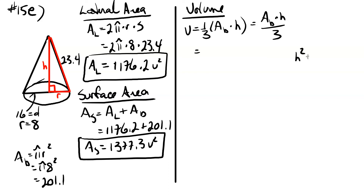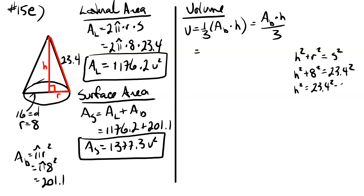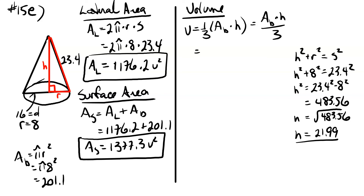Taking the square root of four hundred and eighty three point five six gives us a height of twenty one point nine nine. We already found the area of the base as two hundred and one point one. Multiplying that by the height of twenty one point nine nine and dividing by three, we end up with a volume of one thousand four hundred and seventy four point one units cubed.